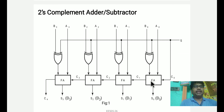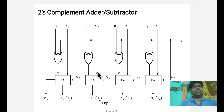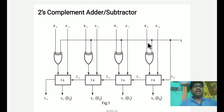Here we can do the full adder circuit. Next: here is A0, B0; here is A1, B1; A2, B2; A3, B3. Here is A0, B0 — we have 4 XOR gates. Here is A0 and B1 connected through XOR gates.